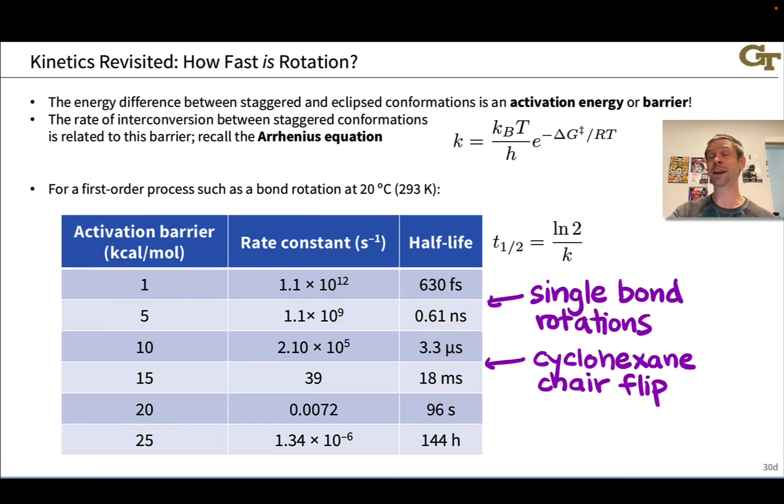Now, we will shortly encounter a conformational change that is actually much slower than single bond rotation because it involves multiple single bond rotations happening together in a cyclic structure, the so-called cyclohexane chair flip. That's much slower because single bonds have to move in concert. They have to move together to flip a cyclohexane chair. And your half-life there is up in the microsecond to millisecond territory.